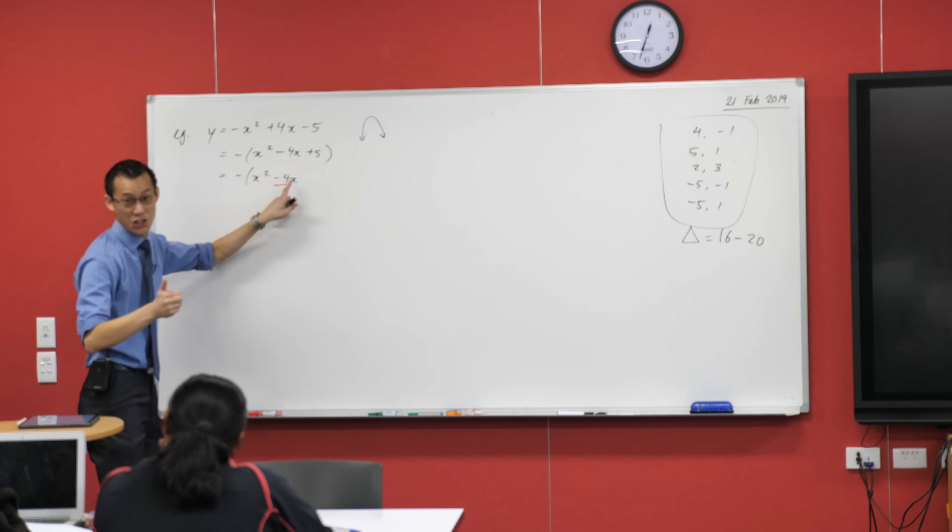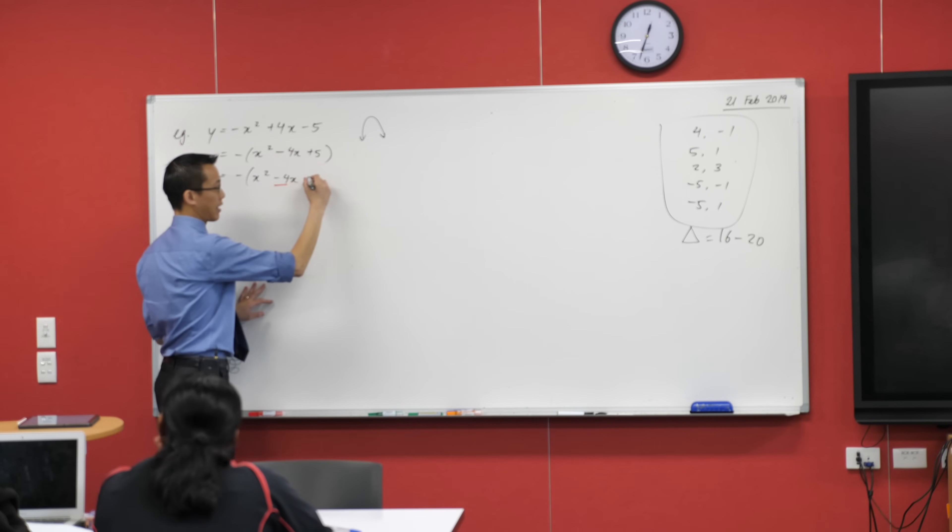We're going to halve the coefficient, it's the coefficient of x, halve it and then square it. So when I halve this I get negative two, when I square it I get four.